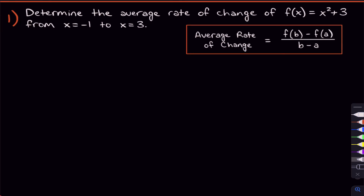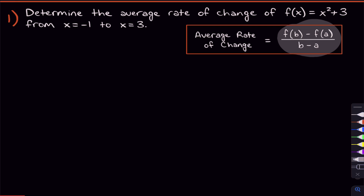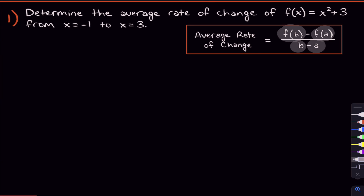We're going to start off with this first problem where we have to determine the average rate of change of f(x), which is x squared plus three, from x equals negative one to x equals three. To find the average rate of change, we're going to use the average rate of change formula, which is right over here on the right. That formula has four different pieces: f(b), f(a), b, and a.